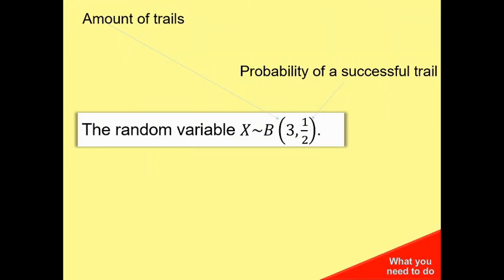These questions tend to be presented like this. This all looks a bit weird, but essentially what this means is it could be modeled using the binomial theorem. The first number is the amount of trials, and the second one is the probability of a successful trial.